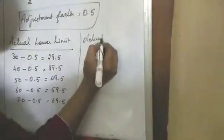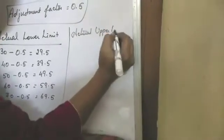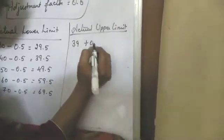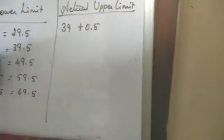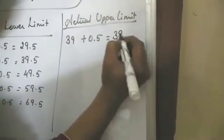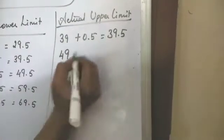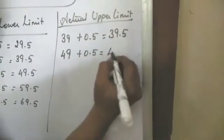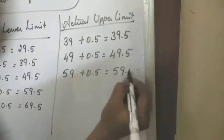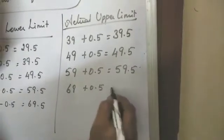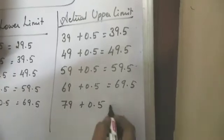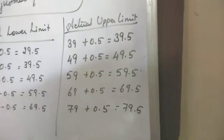Same way, actual upper limit. 39 plus 0.5, so lower limit we have to do the subtraction and with the upper limit we have to add. So 39.5, 49.5, 59.5, 69.5, 79.5.